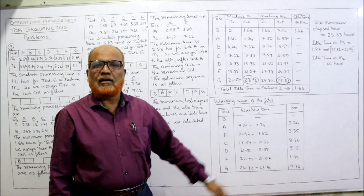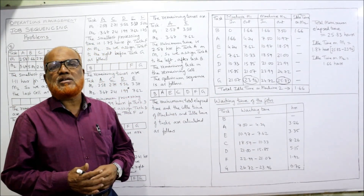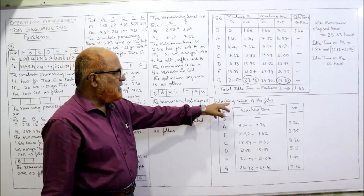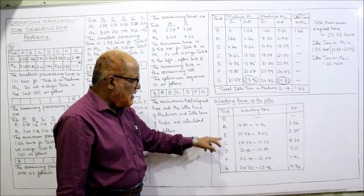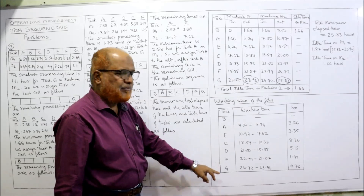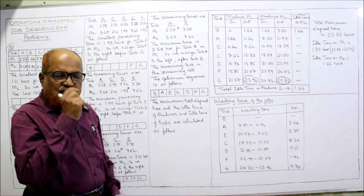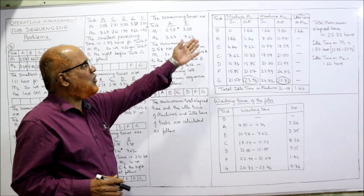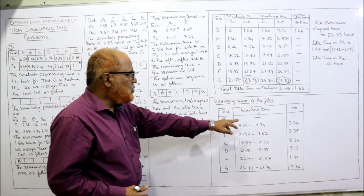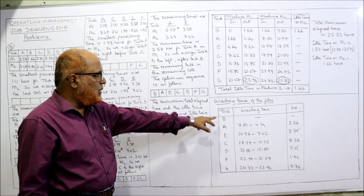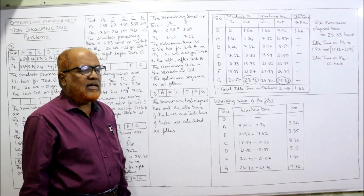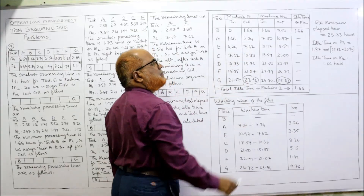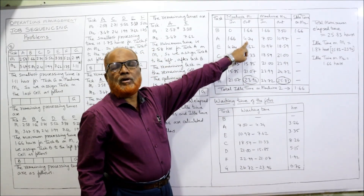We have completed the total elapsed time and idle time. The new point in this problem is the waiting time for the tasks. The sequence is B, A, E, C, D, F, G. For the first job B, there is no waiting time — it starts at zero. So waiting time for job B is zero.